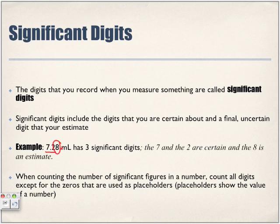The last digit could be 7, 8, or 9 — we don't know exactly. Now, when counting the number of significant figures in a number, count all digits except for zeros that are used as placeholders. We use the term placeholders to show the value of the number.